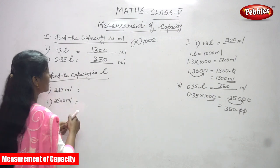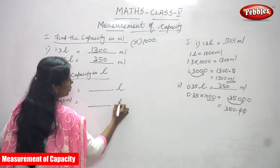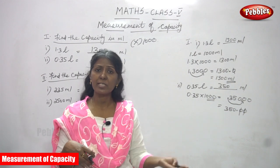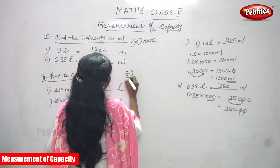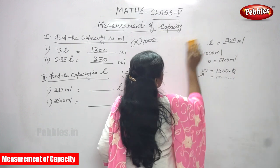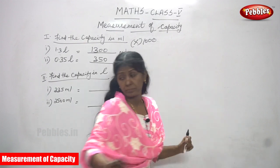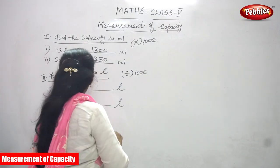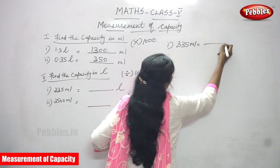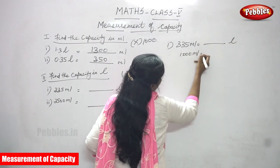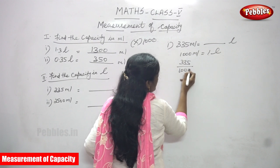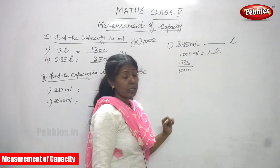Milliliter is a smaller unit and liter is a bigger unit. Smaller to bigger means you have to divide by 1000 — that is very important. The first one: 335 ml is equal to how many liters? The formula is 1000 ml equals one liter. So 335 divided by 1000 — smaller to bigger means you must divide by 1000.